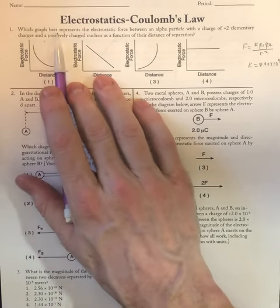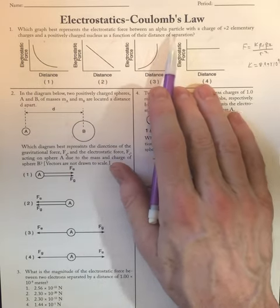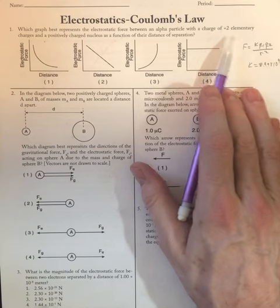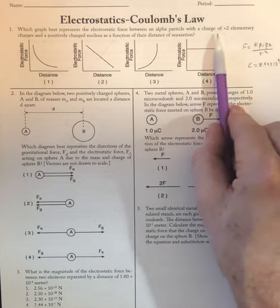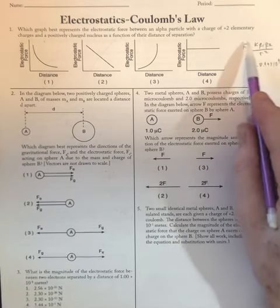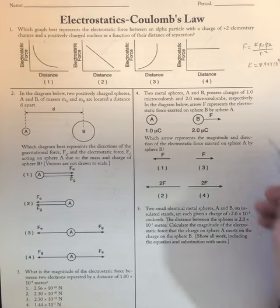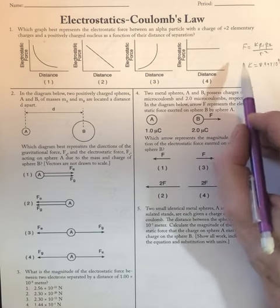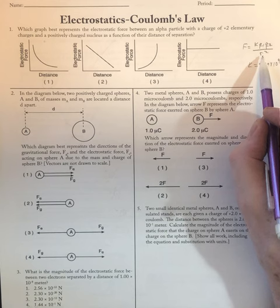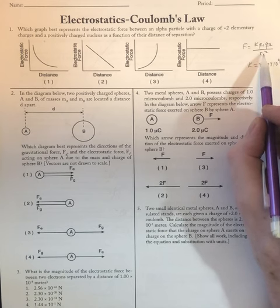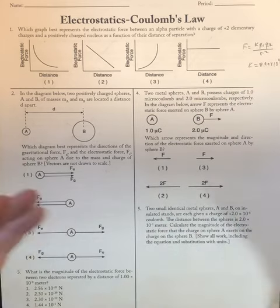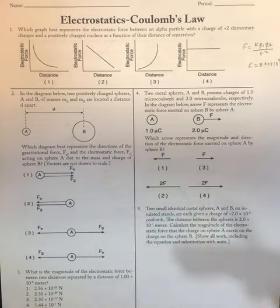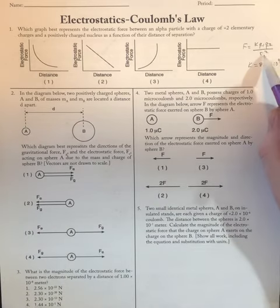First question: which graph best represents the electrostatic force between an alpha particle with a charge of 2+ and a positively charged nucleus as a function of their distance of separation? What we care about is how to manipulate Coulomb's Law. As distance increases, because it's squared, we're going to get a smaller force — the farther away something is, the less force it imposes. But because it's squared, we get some kind of exponential relationship.